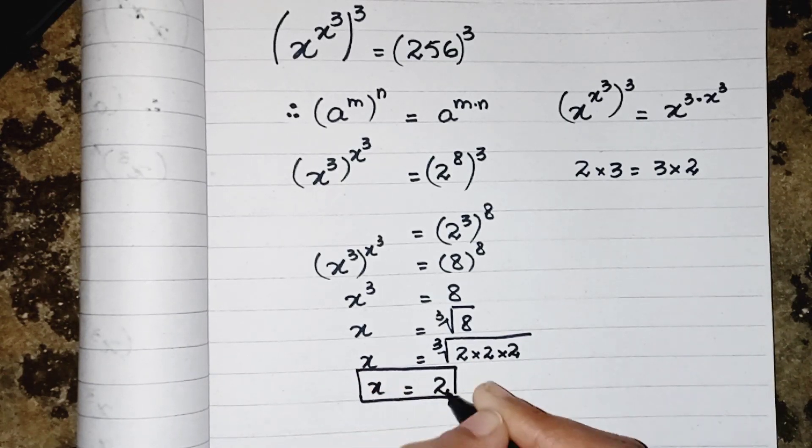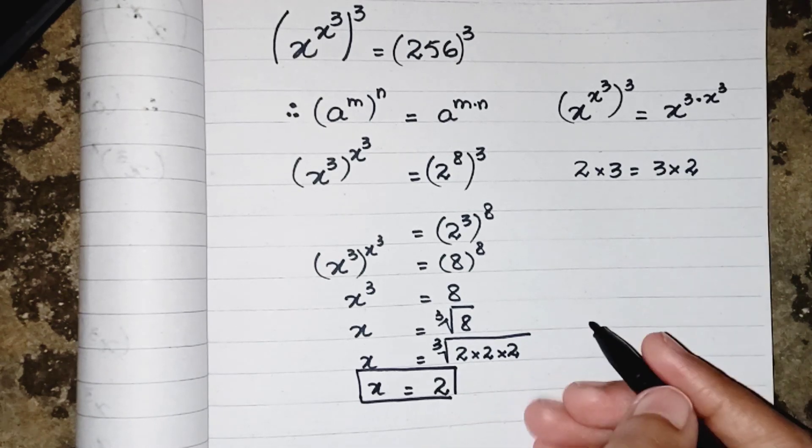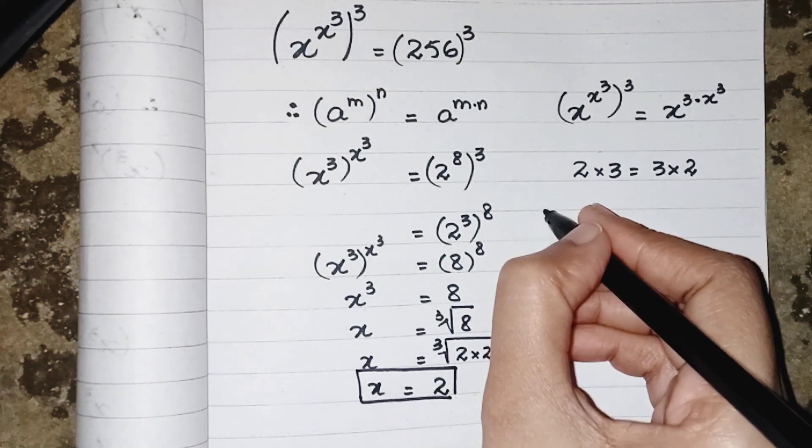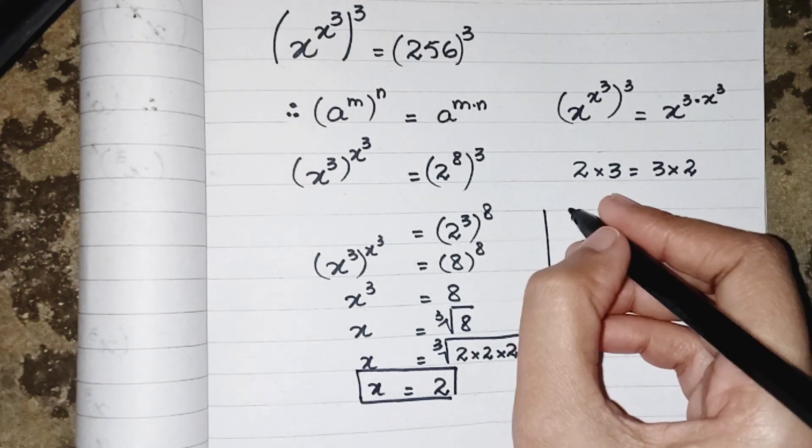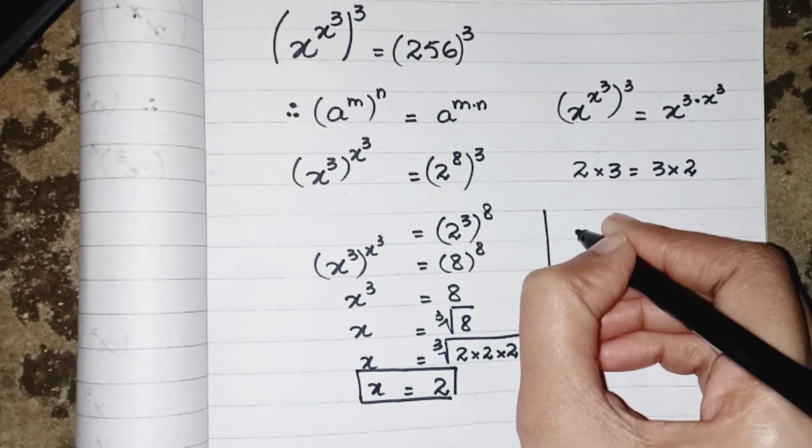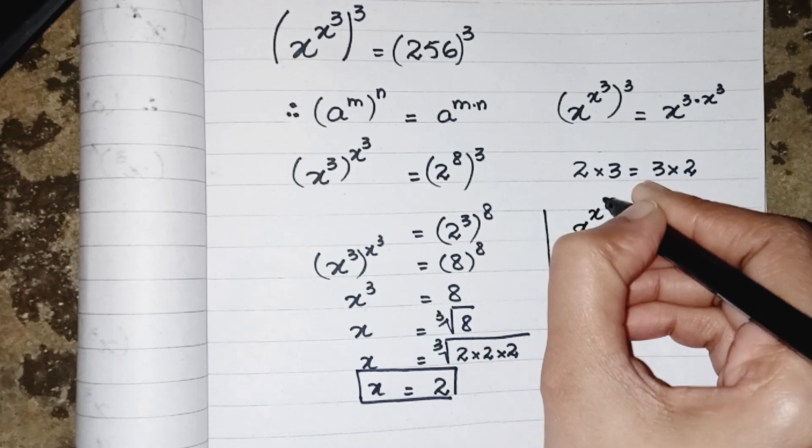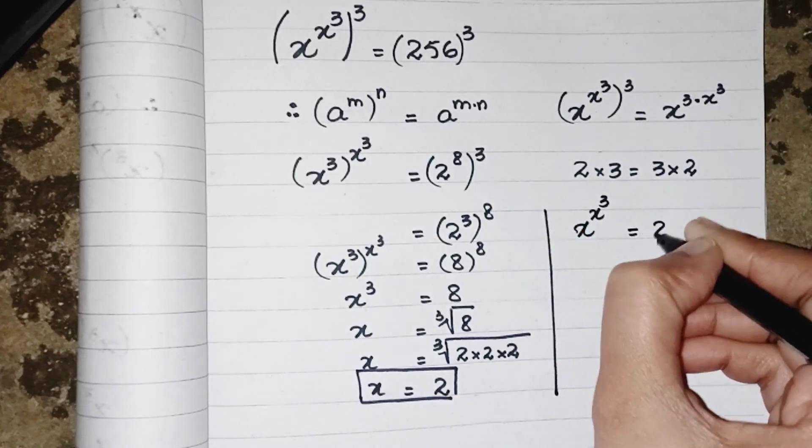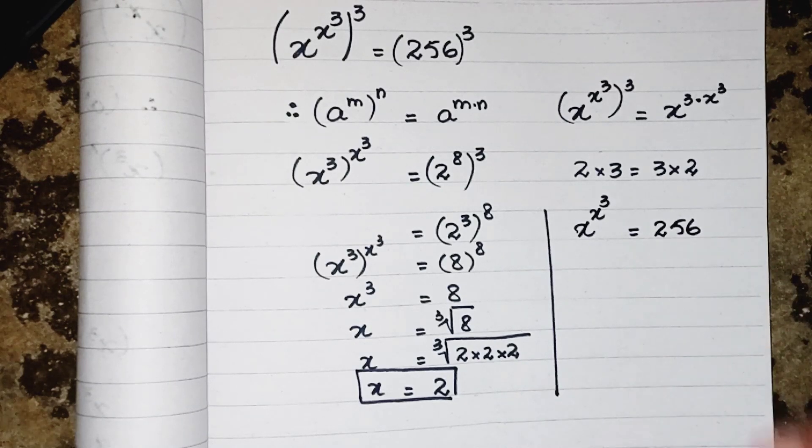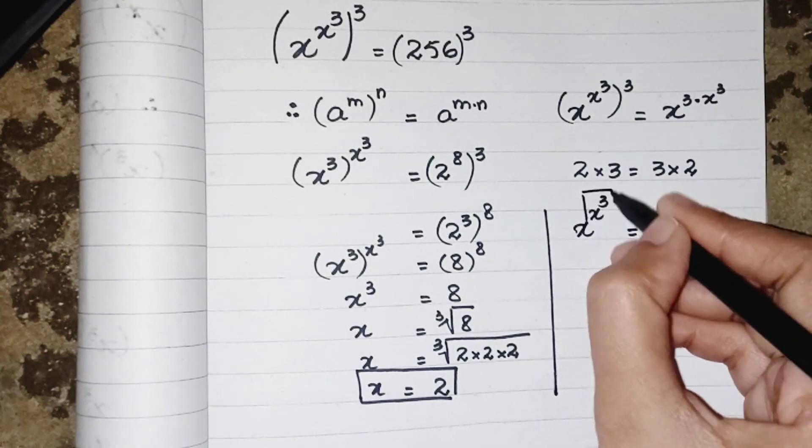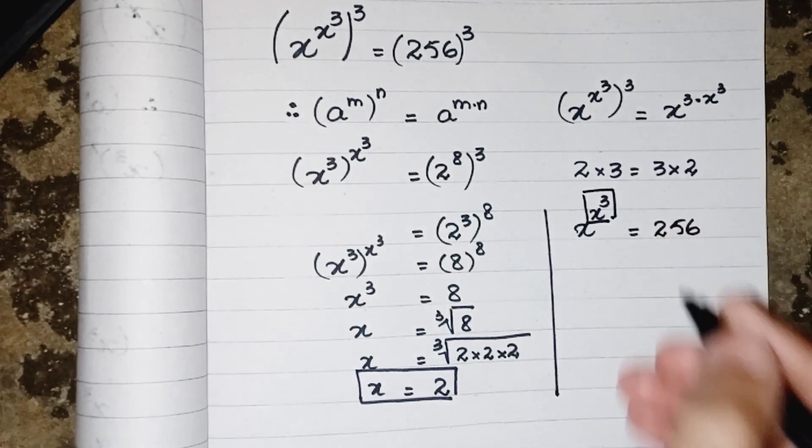Now we have to put the value of x in the given question to see whether this value of x will justify our answer or not. So first of all, we can write the question: x power x whole power 3 equals 256, which is our question. So x power 3 first, sorted them.